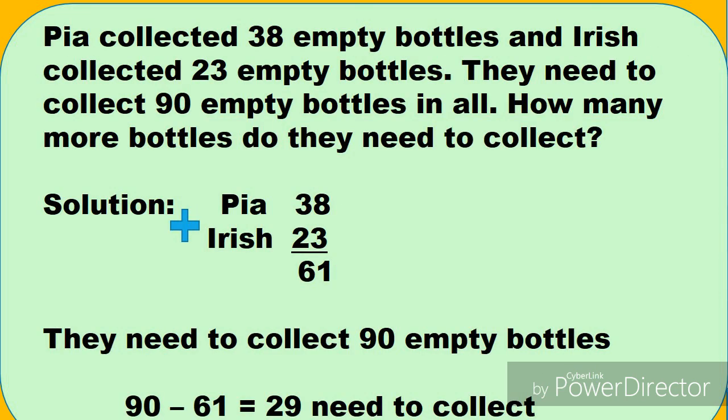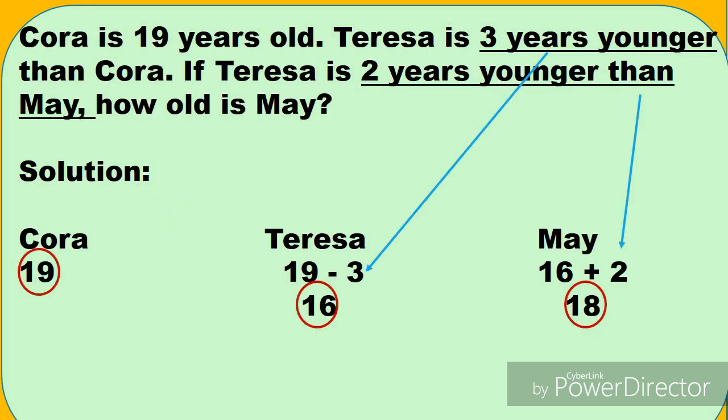Next. Pia collected 38 empty bottles and Irish collected 23 empty bottles. They need to collect 90 empty bottles in all. How many more bottles do they need to collect? Solution. Pia is 38, si Irish nakakolekta ng 23. Pag pinagsama natin, it is equal to 61. But they need to collect 90 empty bottles. So nakakolekta na sila ng 61. Ilan pa ang dapat nilang i-collect? So isasubtract lang natin yun. 90 minus 61 equals 29. So they need to collect 29 bottles.